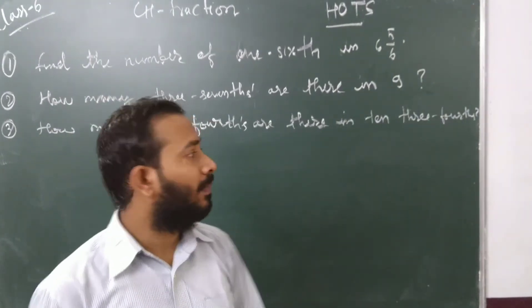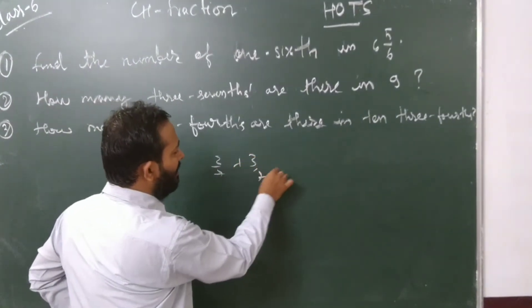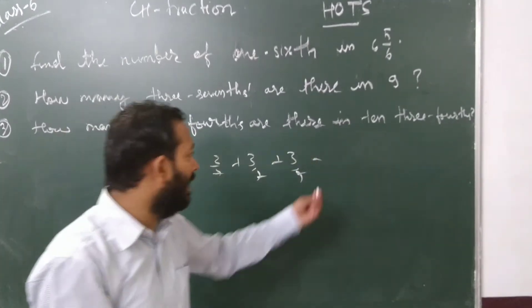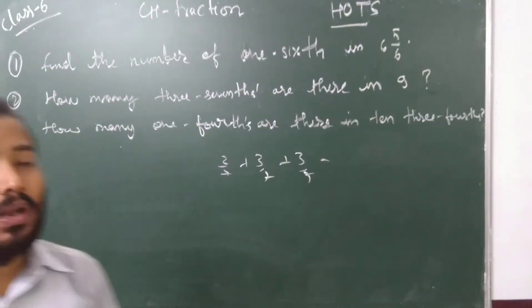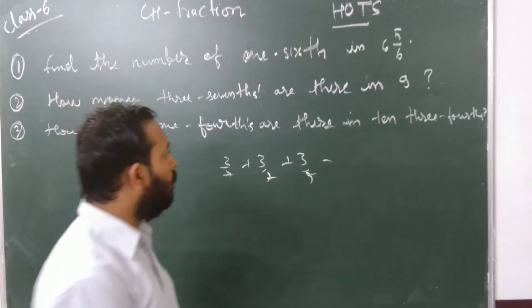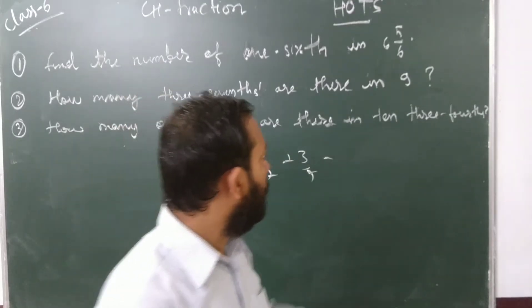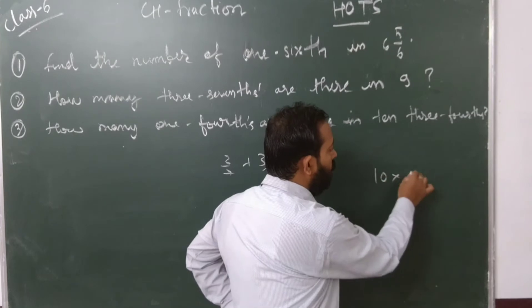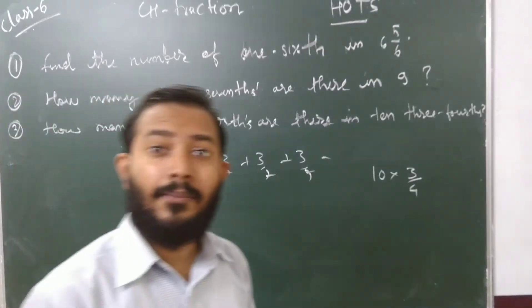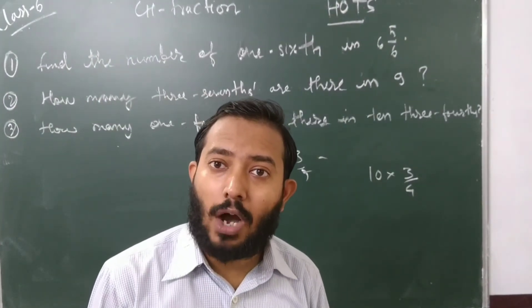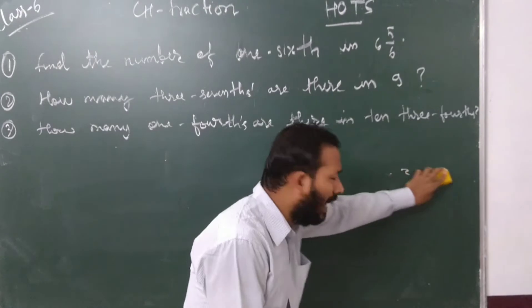The second one is a similar question: how many three-sevenths are there in 9? And the third one: how many one-fourths are there in ten three-fourths? Remember, ten three-fourths means 10 times 3/4. How many one-fourths are there? We need to find that. Let's see one by one. All have a similar approach.